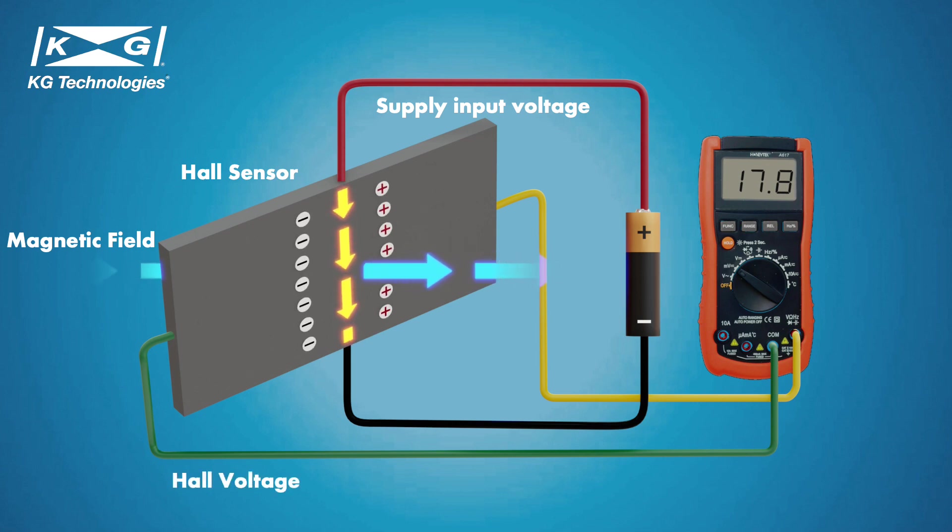It then produces a small Hall voltage. The Hall voltage is then amplified by the amplifier and fed to a voltmeter whose dial is calibrated in ampere scale. The ampere scale meter's output can represent the current passing through the conductor.